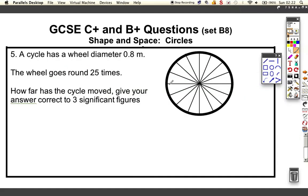The cycle has a wheel diameter 0.8 meters. The wheel goes around 25 times. How far has the cycle moved? We need to work out the circumference of the circle first. The circumference is pi times diameter. The diameter is 0.8, so the circumference is pi times 0.8.